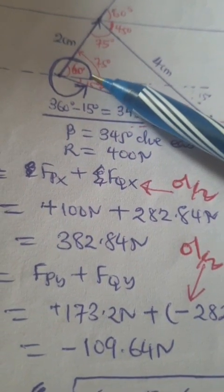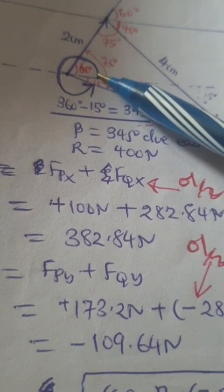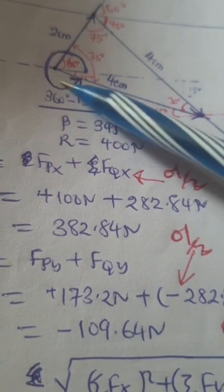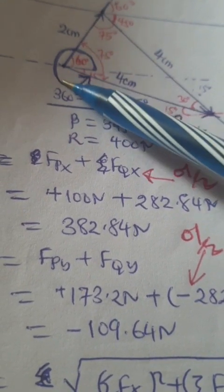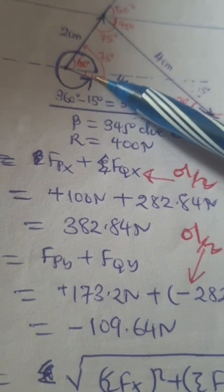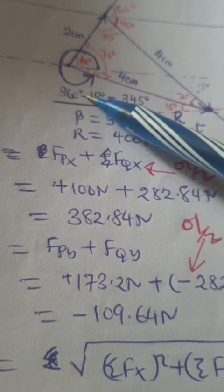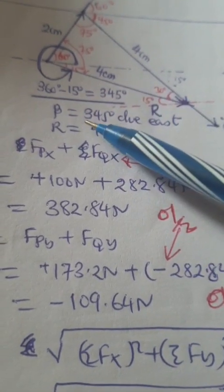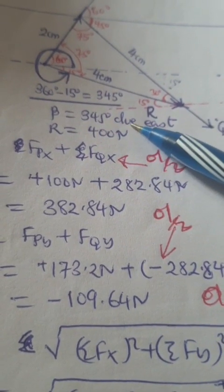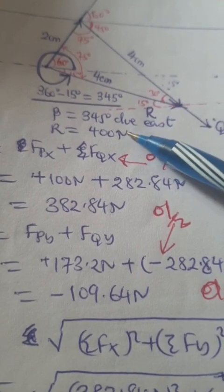And our direction is from east. We take 360 degrees minus 15, and we get 345 degrees from east.